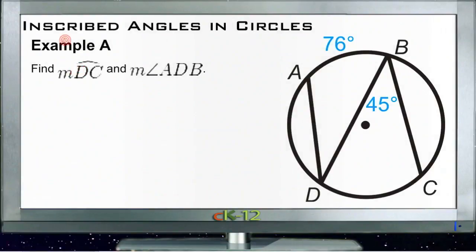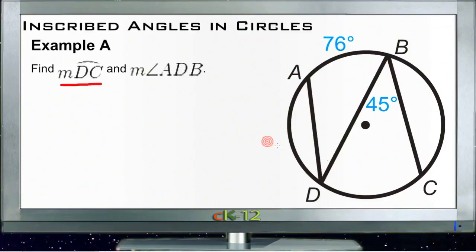Let's go over the example problems for inscribed angles and circles. Example A asks us to find the measure of arc DC and the measure of angle ADB.